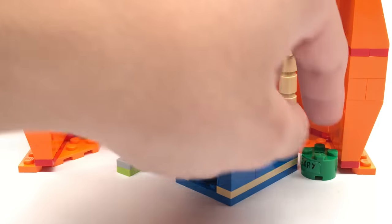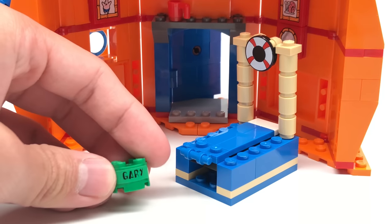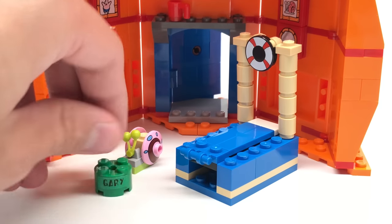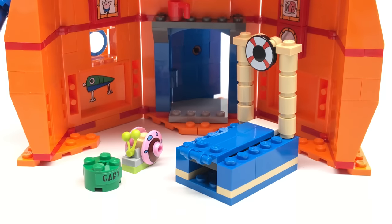And finally, we have Gary's ball right here, which does have a sticker on it. I wouldn't even consider this a build. It's just literally one piece, a circular cylinder piece. But yeah, that's it for the interior builds. Now let's move on to the side outside builds.